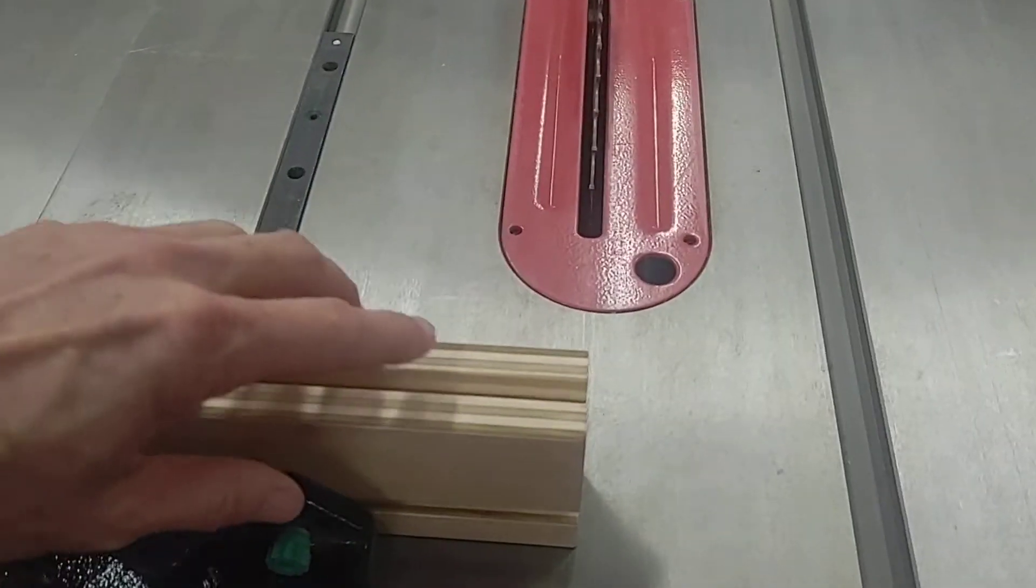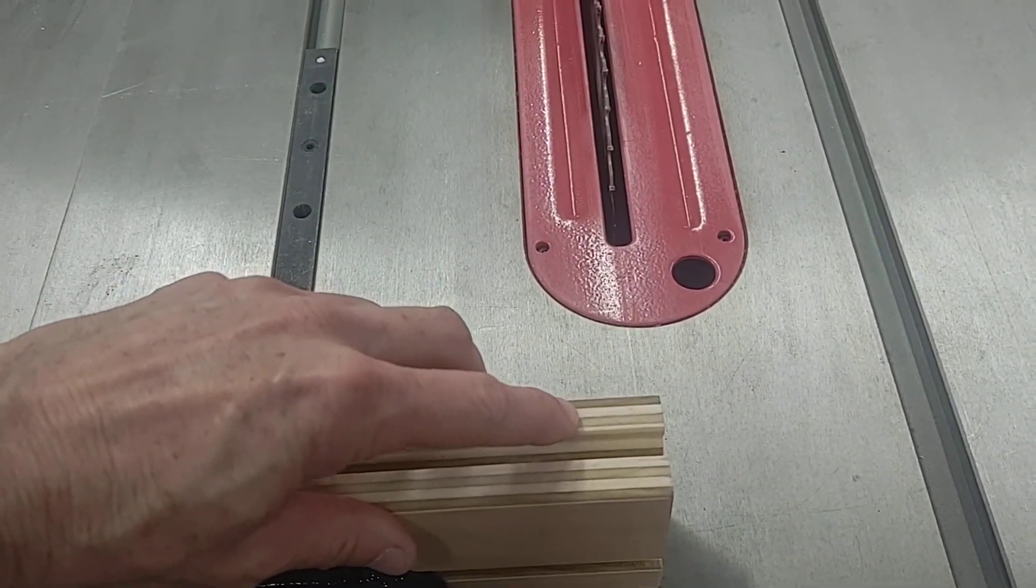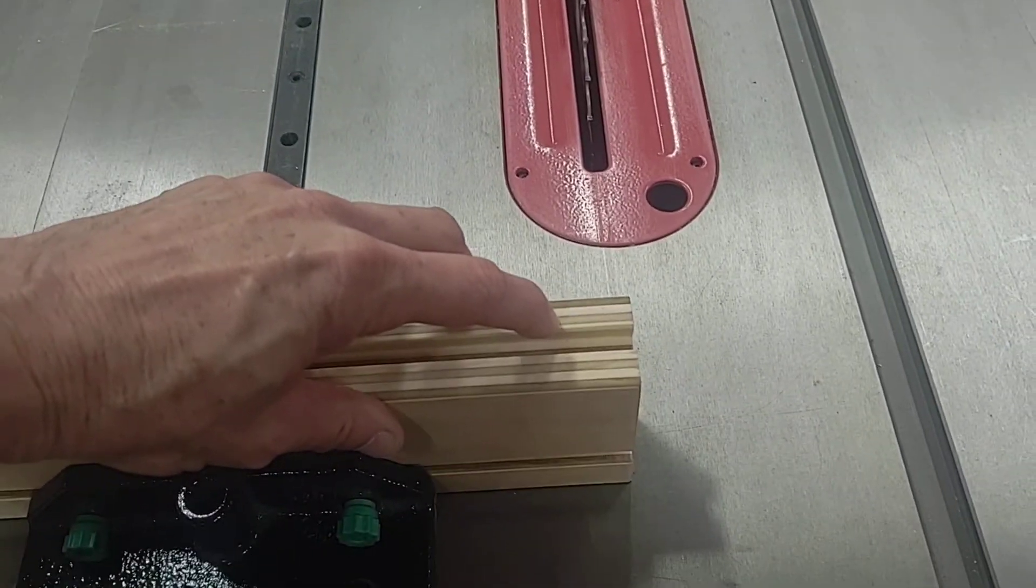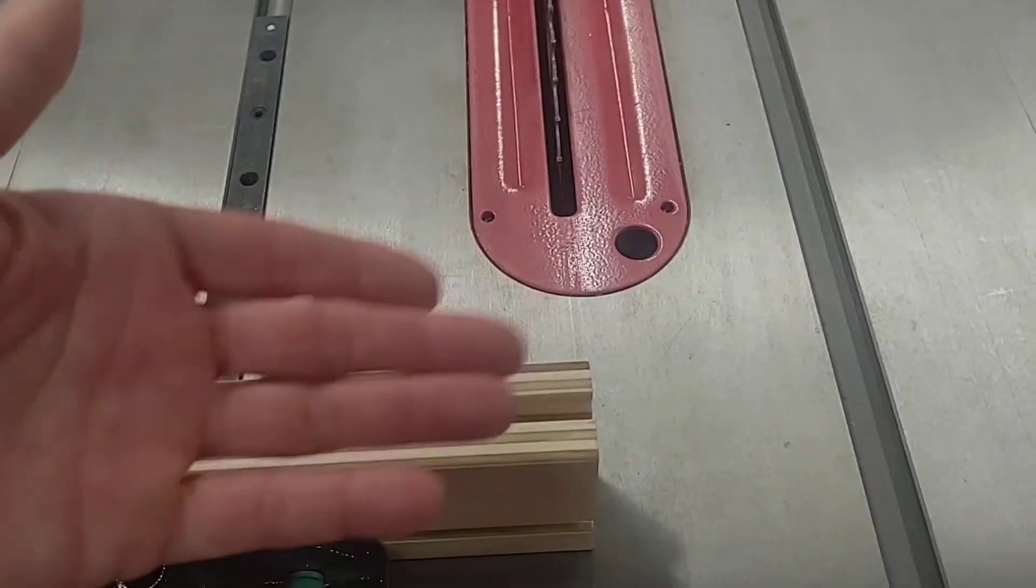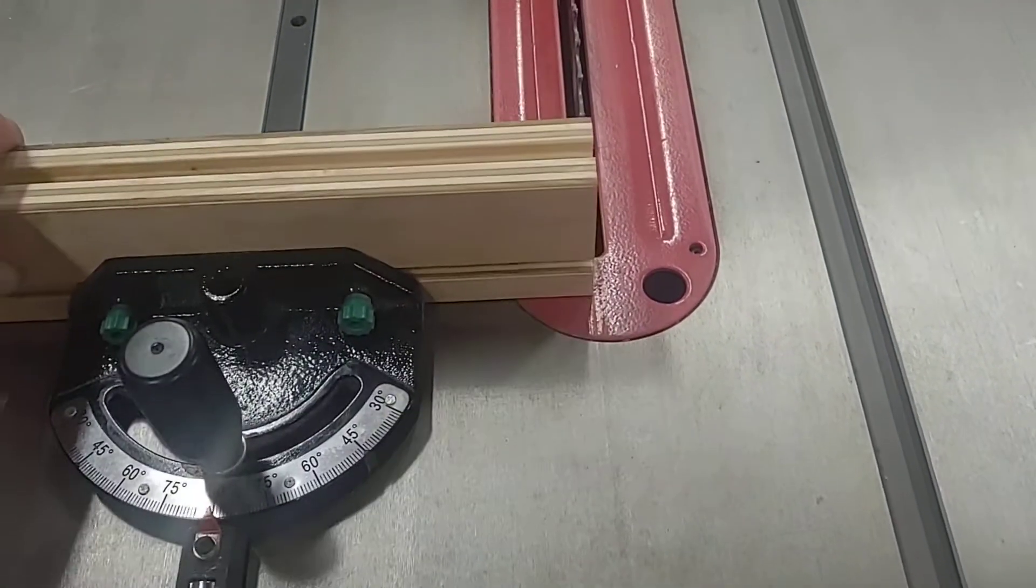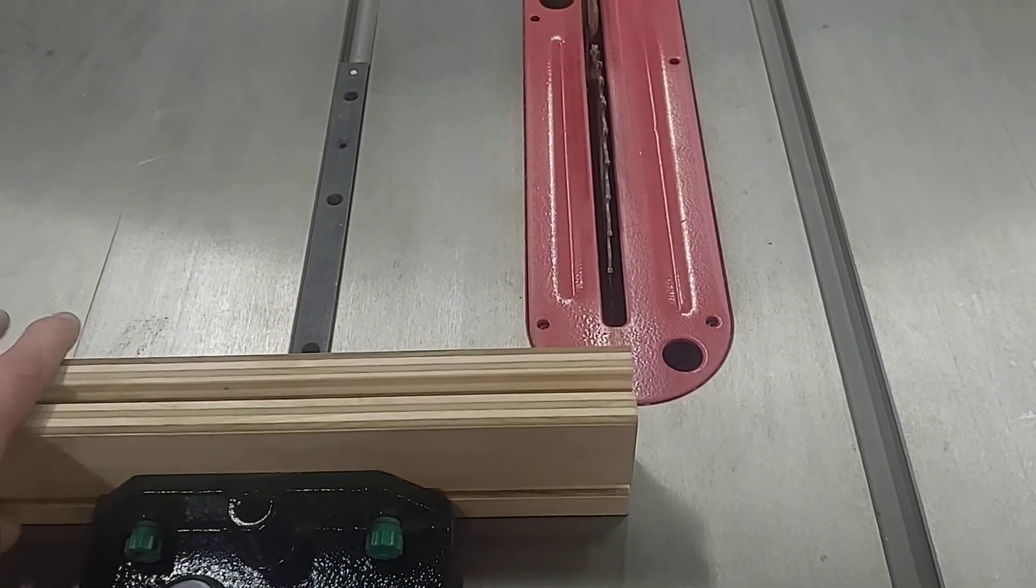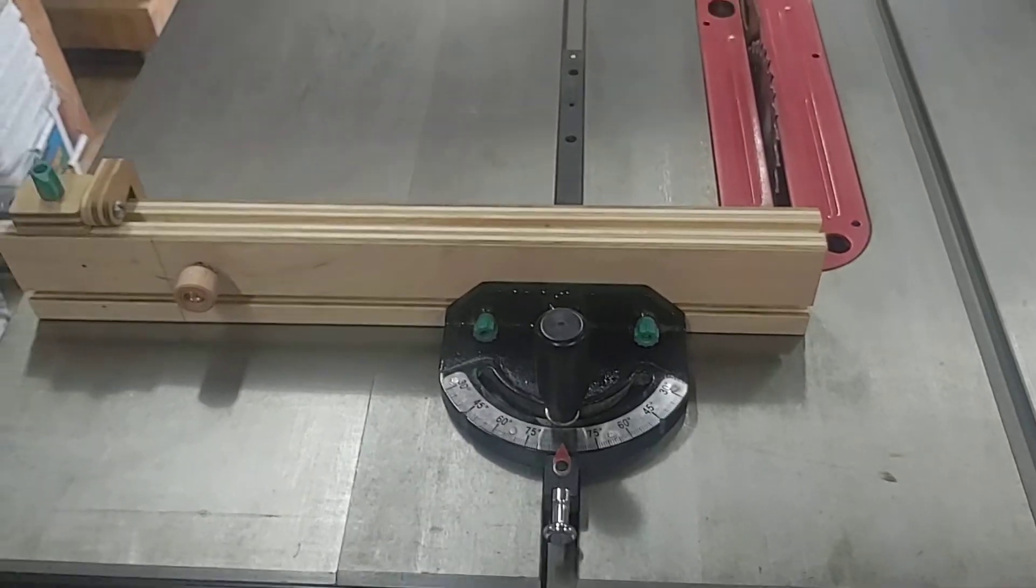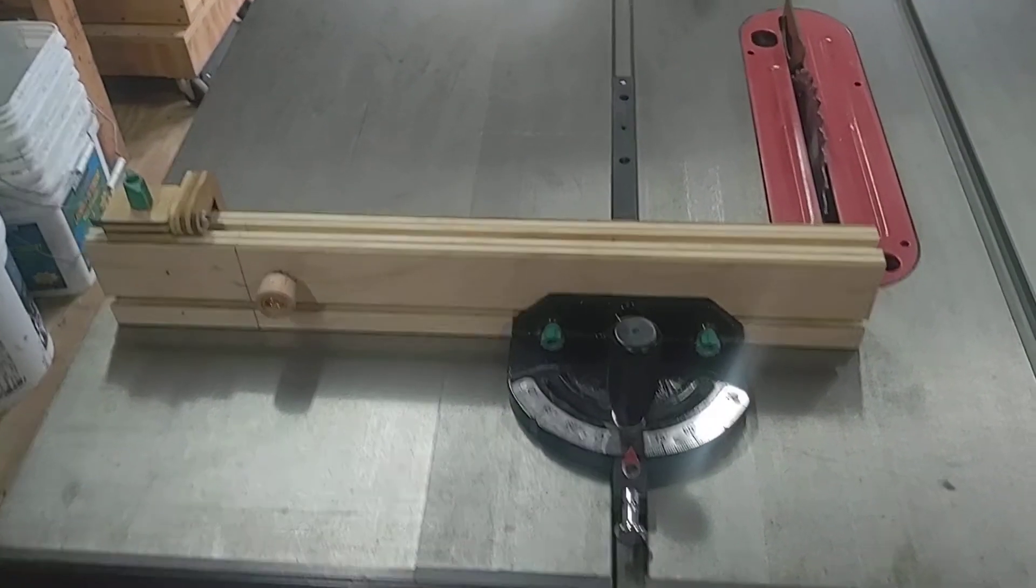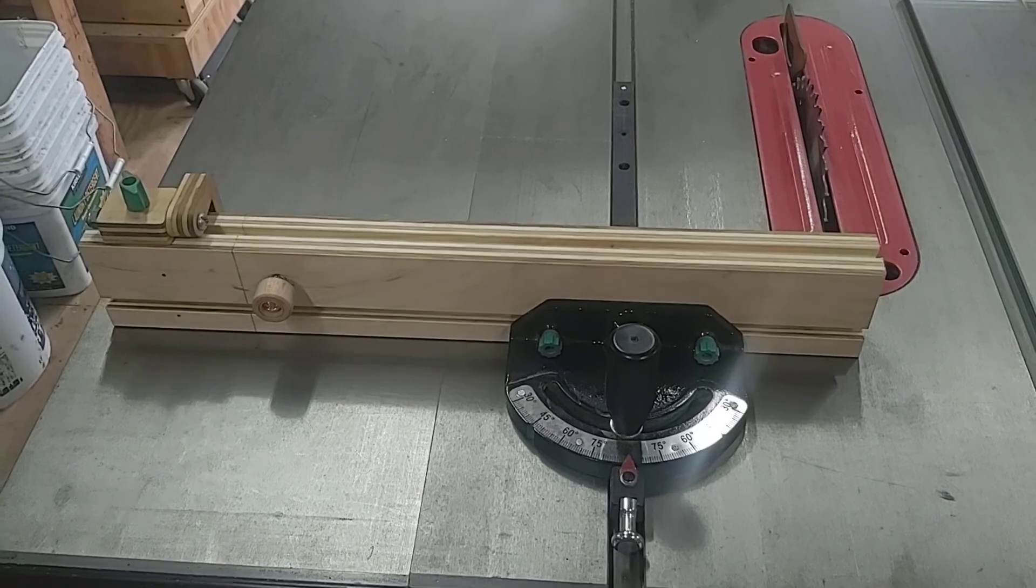And the other thing he did, which I thought was a good attention to detail, the rods only come to about an inch from the end. That way, if you ever slid this thing over and got in line with your blade, you're not going to hit the aluminum rods, hopefully. So that's it. I will leave a link in the description and you can find exactly how he does it there.